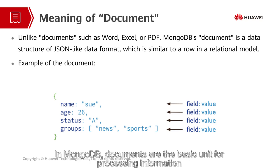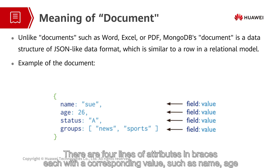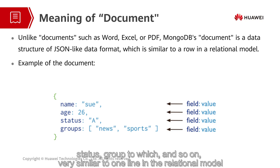In MongoDB, documents are the basic units for processing information. As shown in the figure, the following is an example of a document. There are four lines of attributes in braces, each with a corresponding value such as name, age, status, and so on — very similar to one line in the relational model.